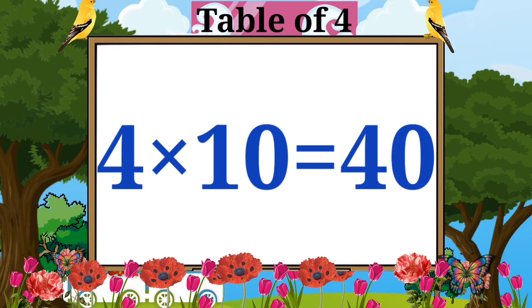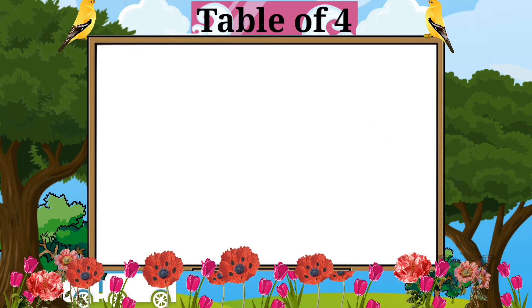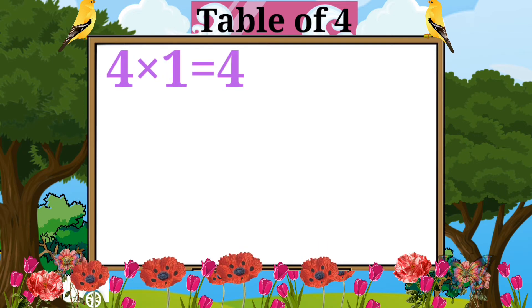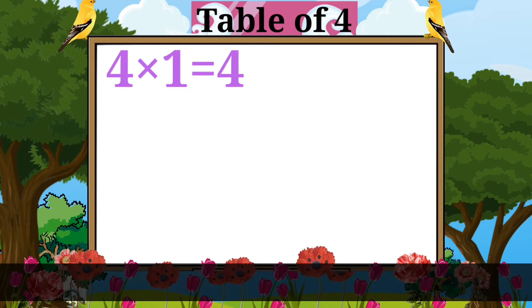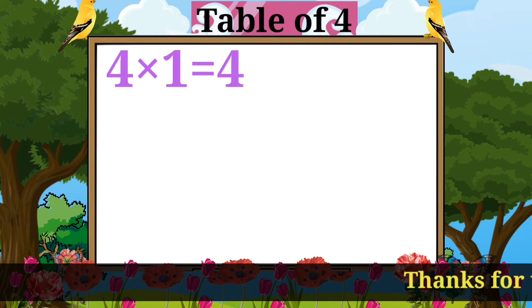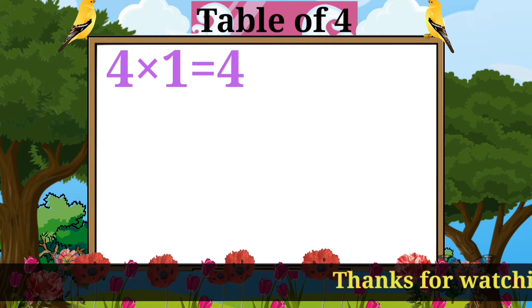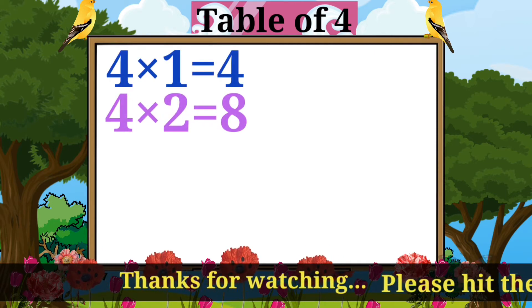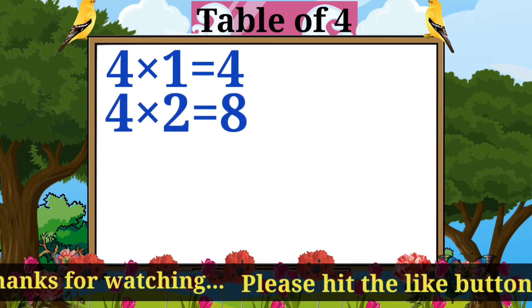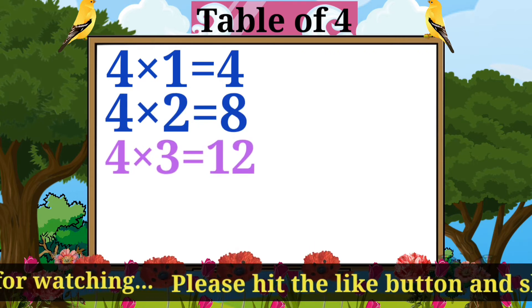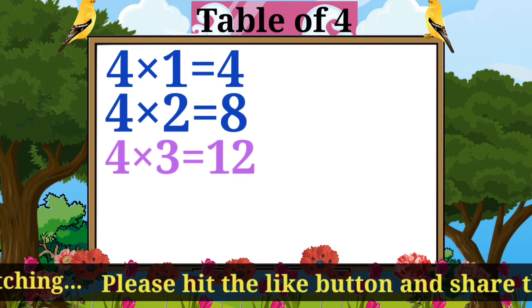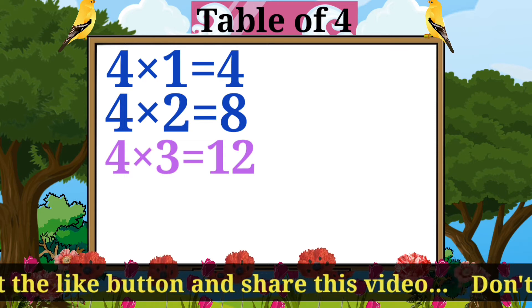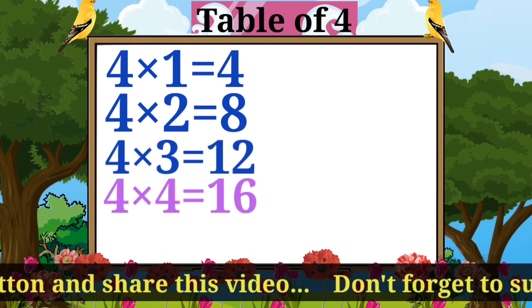Four tens are forty. Four ones are four. Four twos are eight. Four threes are twelve. Four fours are sixteen.